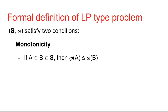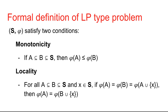The formal definition of LP-type problems requires that S and phi satisfy two conditions. First, monotonicity: for any sets A and B where A is a subset of B, we have phi of A is at most phi of B. Second, locality, as defined on screen. Intuitively, monotonicity says adding more constraints makes it harder to minimize phi. Locality says that if adding two new constraints x and y individually doesn't change the objective value, then adding them both simultaneously also doesn't change the objective value.